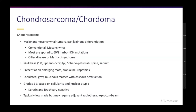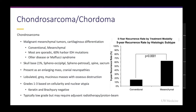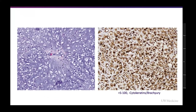Chondrosarcomas cause local osseous destruction and compressive neurologic symptoms. The majority are low-grade requiring observation and/or radiation. Combined treatment of surgery and radiation reduces five-year recurrence rates. Radiation alone is probably limited to tissue diagnosis and limited pre-treatment tumor size, but may benefit patients who are poor surgical candidates. The mesenchymal subtype has a much higher recurrence than conventional. Histologically, they are moderately hypercellular without nuclear atypia, staining positive for S100 but negative for keratins and brachyury — contrasting with chordomas.